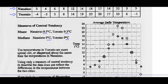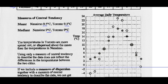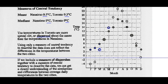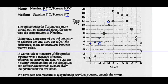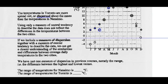If we look at the graphs, we notice that Nanaimo is the dark colored-in ones, and Toronto is the open circles. Their graphs are quite different. We see that the temperatures in Toronto are more spread out or dispersed about the mean than the temperatures in Nanaimo. Using only the measure of central tendency, the data does not reflect the differences between the two cities. If we include a measure of dispersion together with a measure of central tendency, we can get a clearer understanding of the similarities and differences.